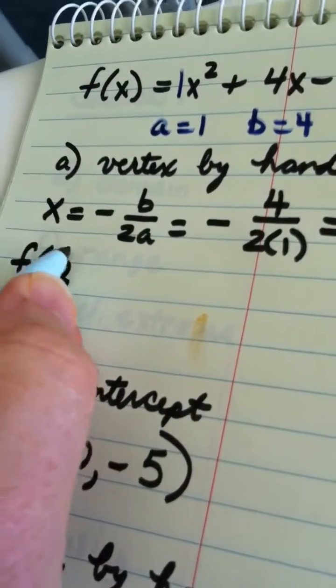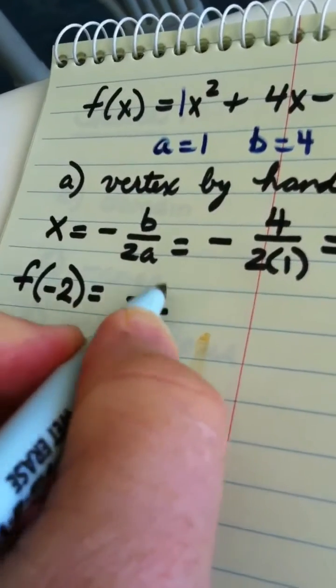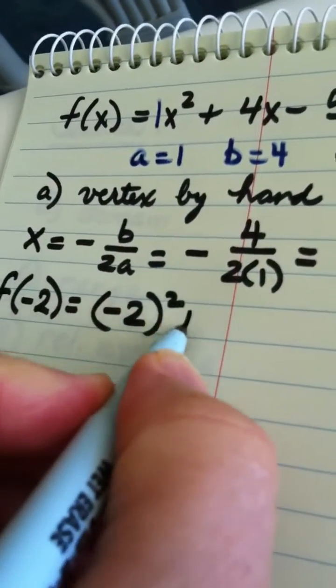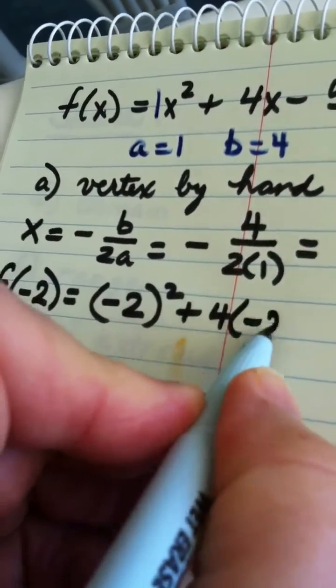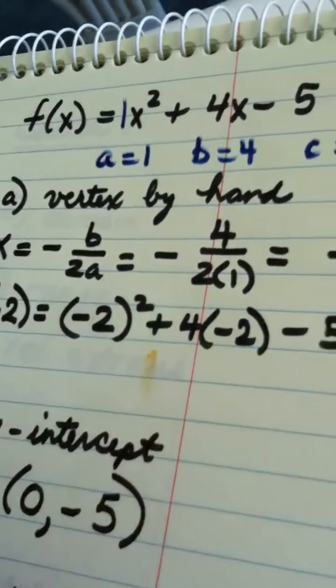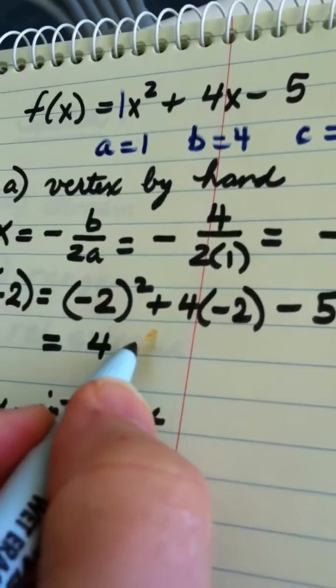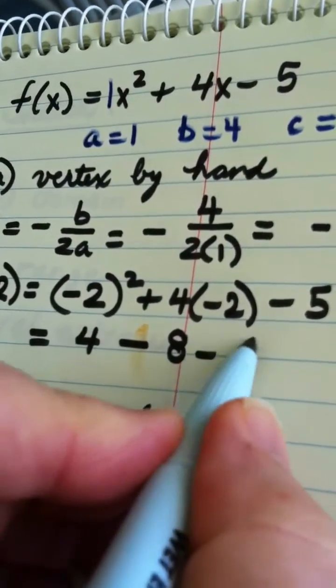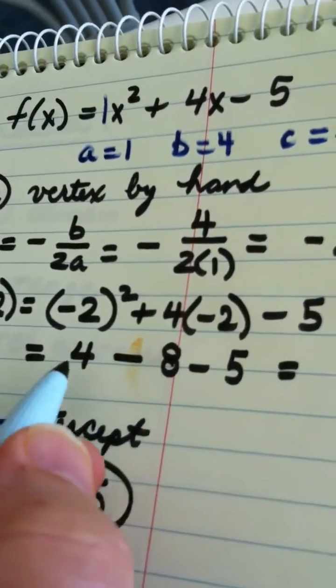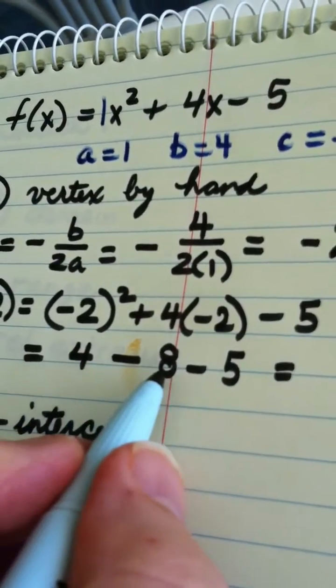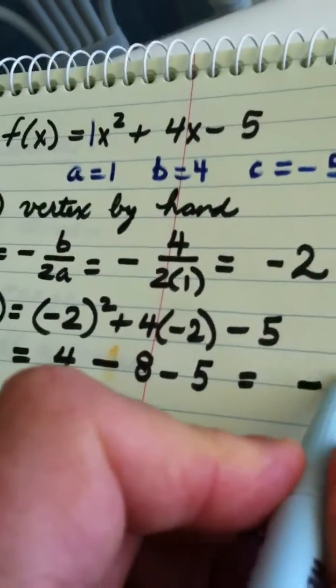To find the y coordinate, we plug negative 2 into the function. We get negative 2 quantity squared plus 4 times negative 2 minus 5. This would be 4 minus 8 minus 5. Let's see, 4 minus 8 is negative 4, minus 5 is negative 9.